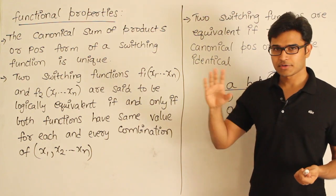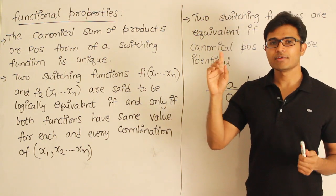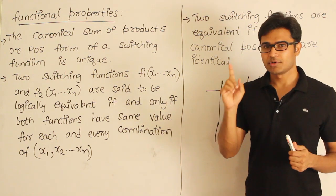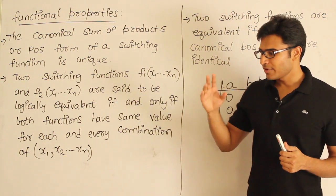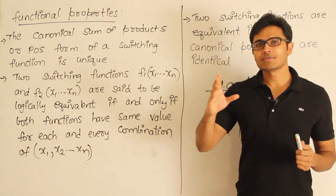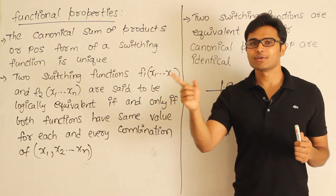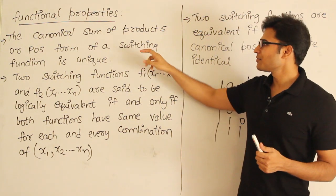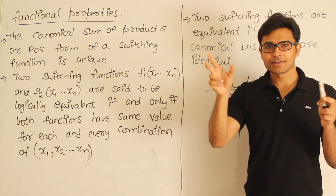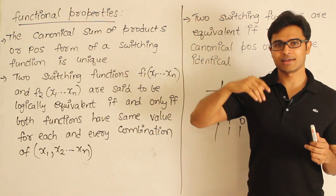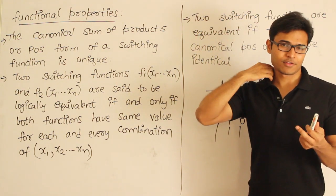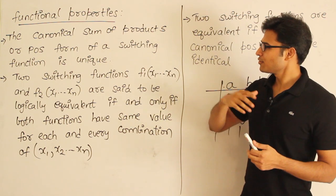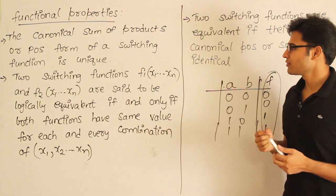Given a function, there will always be a unique canonical SOP or POS form. In finite automata, we minimize to prove that two automatas are the same. But here we are taking every expression and trying to maximize it — canonical forms are maximum forms, putting everything in to show it.